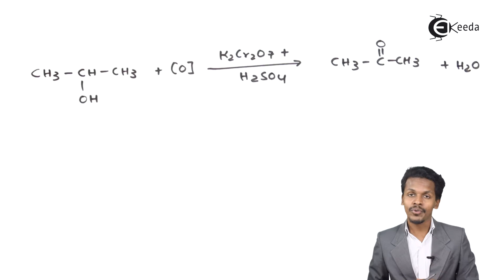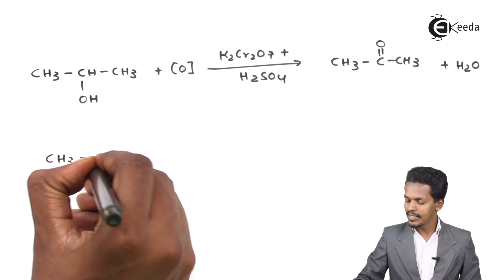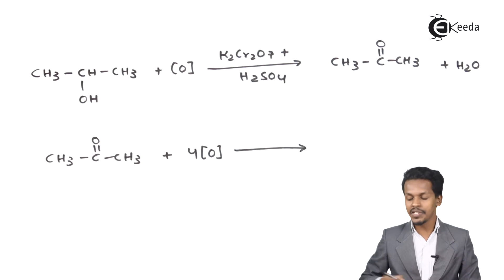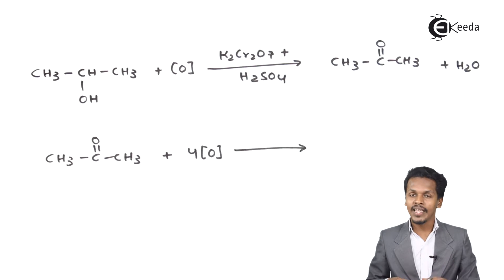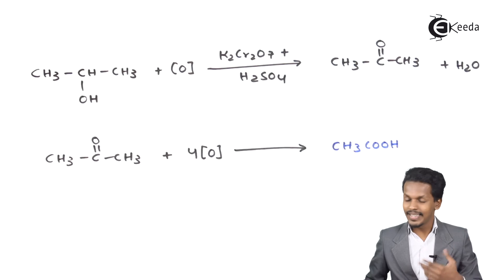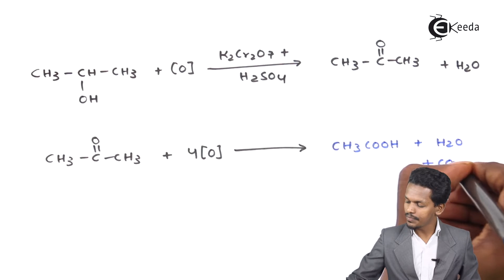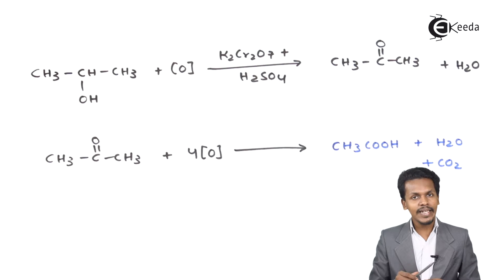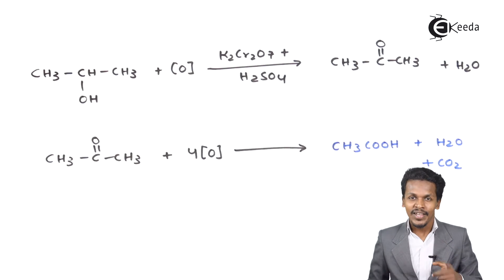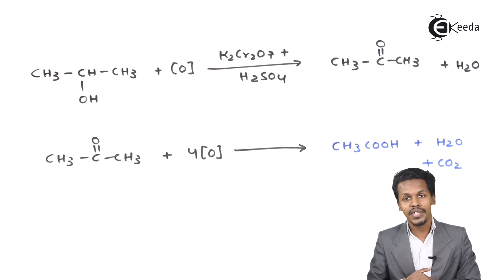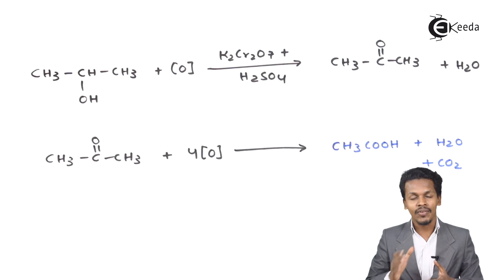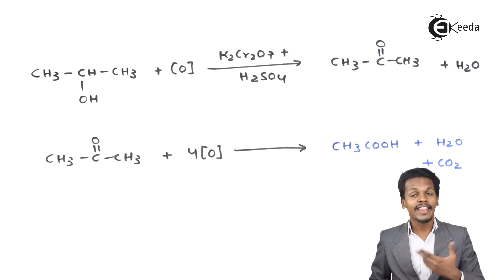This ketone can also undergo further oxidation. If CH3C(=O)CH3 undergoes oxidation using K2Cr2O7 and H2SO4 under vigorous conditions, 4 nascent oxygen atoms are used, and the product is CH3COOH (a carboxylic acid) along with H2O and CO2 as byproducts. Notably, the original secondary alcohol had 3 carbon atoms, but the carboxylic acid product has only 2. So during excessive oxidation of secondary alcohol, the carbon content decreases by 1 — this is called destructive oxidation, where carbon dioxide is released.